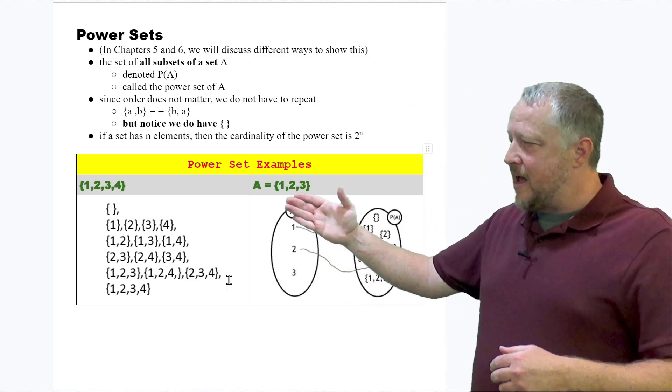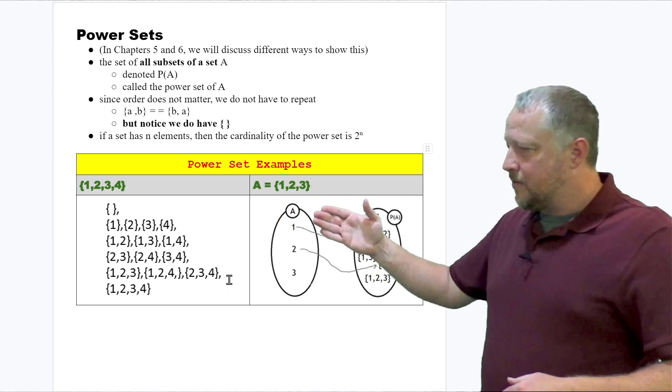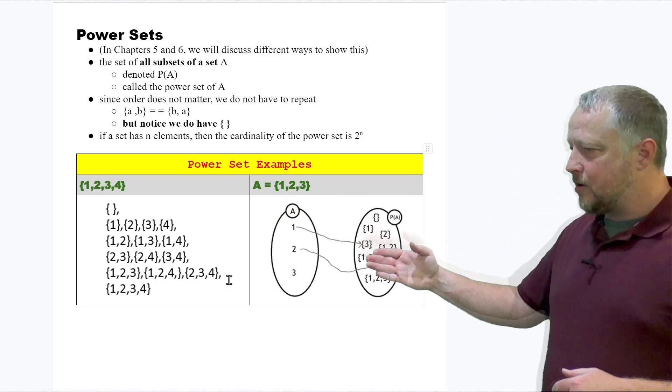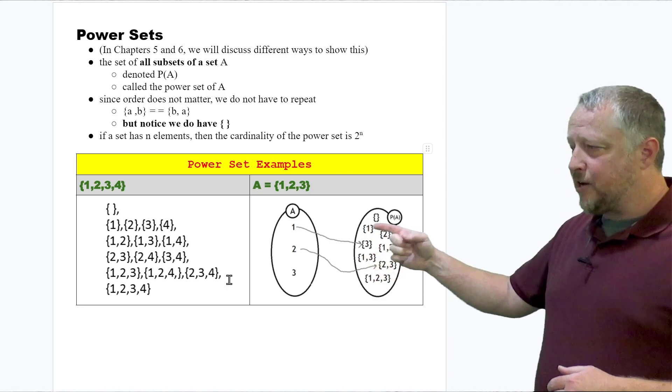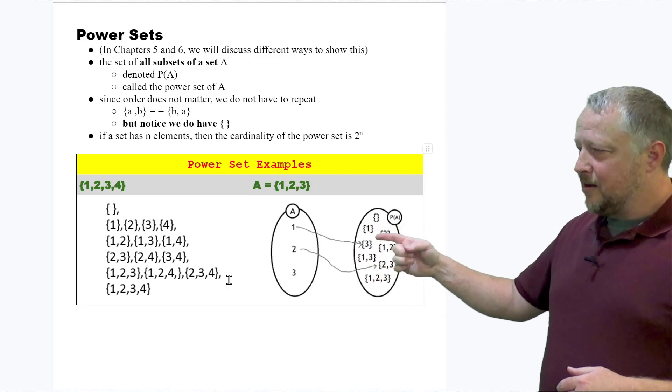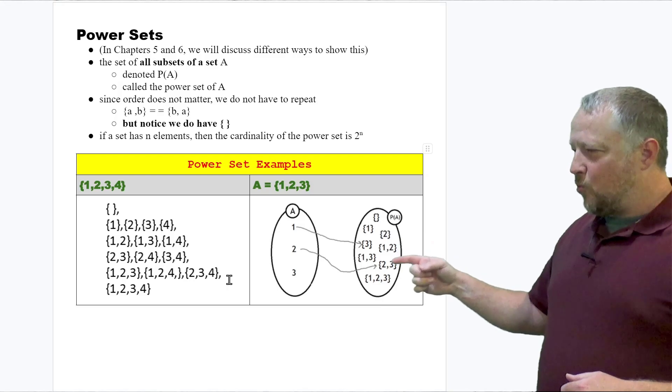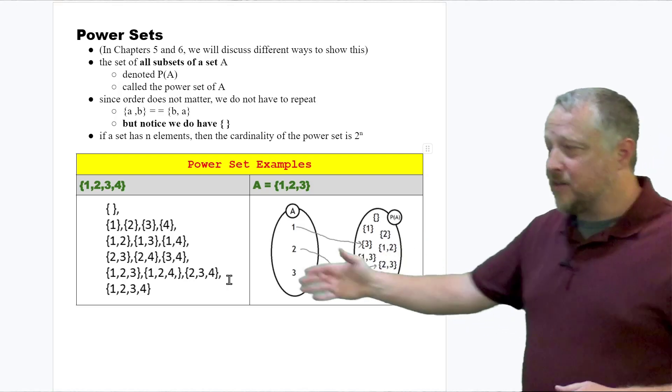Now, if we happen to have just a set that has three items, that's going to have your empty set again, your one, two, three, and then one, two, one. I wish this was kind of laid out nicely like this one here, right?